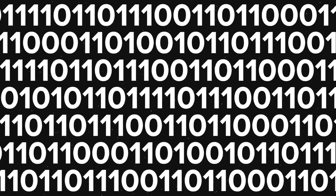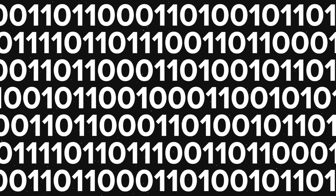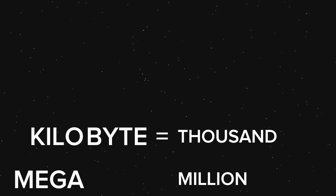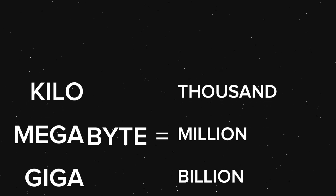Computer information is stored in a series of ones and zeros. Eight ones and zeros is called a byte. After that, we use the metric system to name larger and larger sets of data. A kilobyte is a thousand bytes of information, a megabyte is a million, and a gigabyte is a billion.